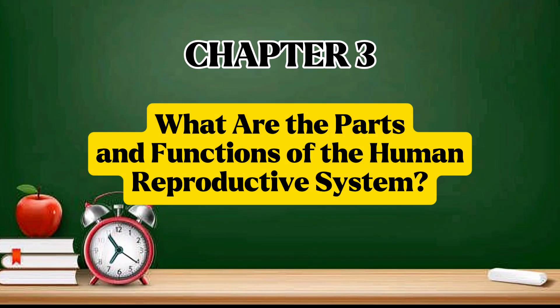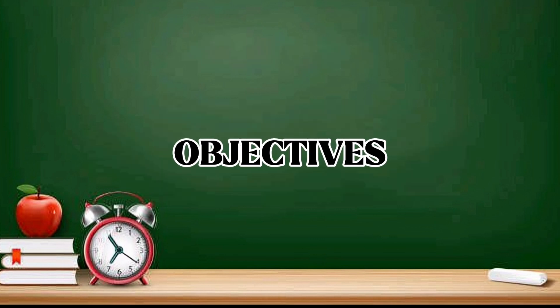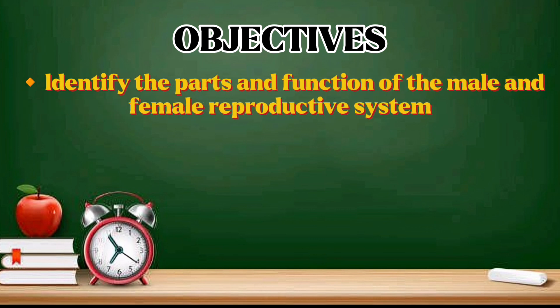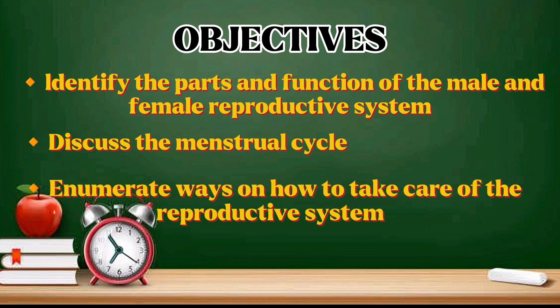Chapter 3: What are the parts and functions of the human reproductive system? Objectives: identify the parts and functions of the male and female reproductive system; discuss the menstrual cycle; enumerate ways on how to take care of the reproductive system.